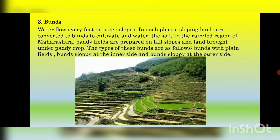Next, Buns. Water flows very fast on steep slopes, so sloping lands are converted to Buns to cultivate and water the soil. For long distances, these slopes look like steps on hills. It is a field prepared on slopes by digging part and filling half, like steps. Where the soil depth is sufficient and water is available, the slope is converted to Buns. In the rain-fed region of Maharashtra, paddy fields are prepared on hill slopes and most land is brought under paddy crop cultivation.